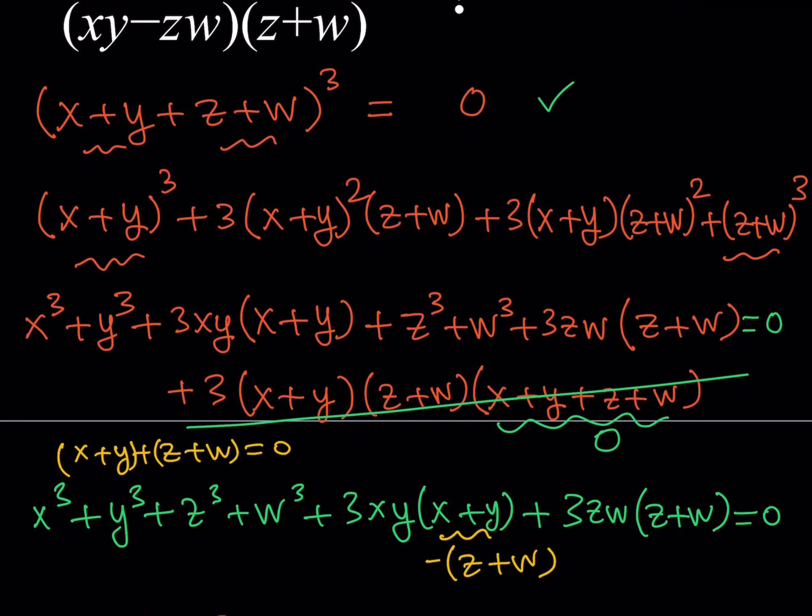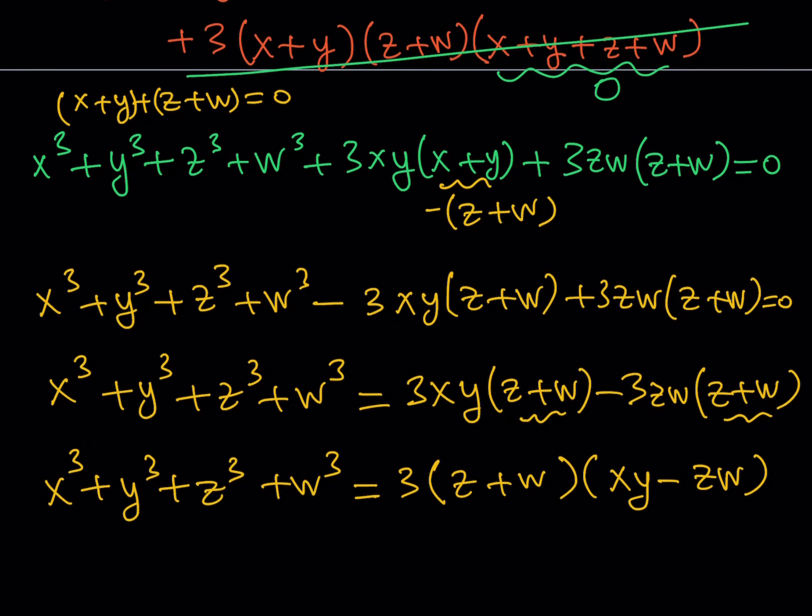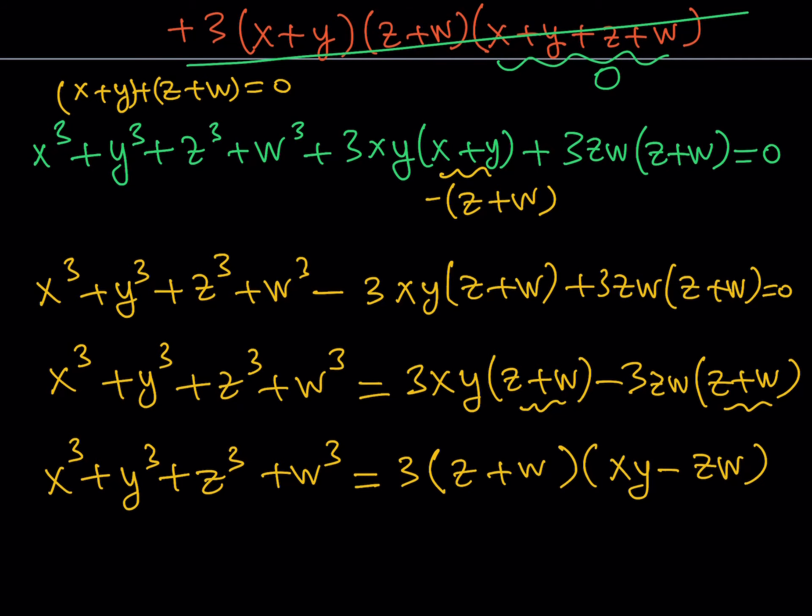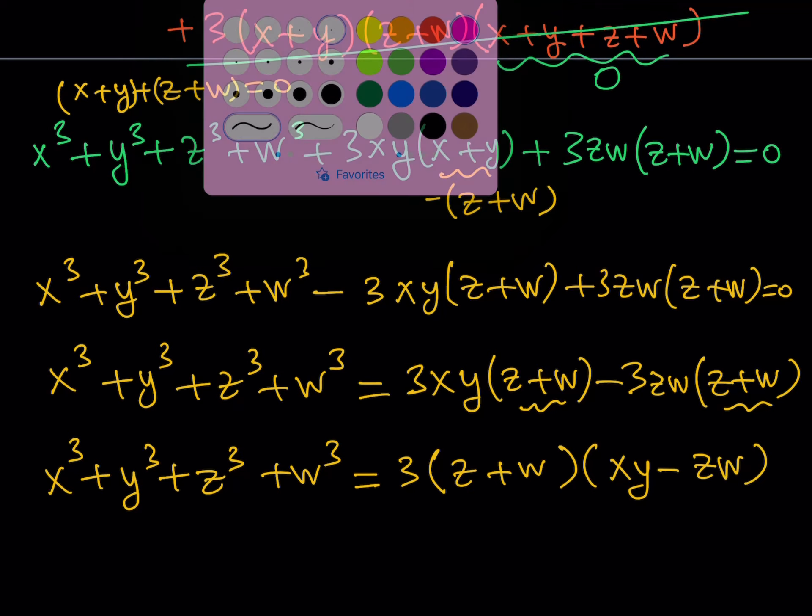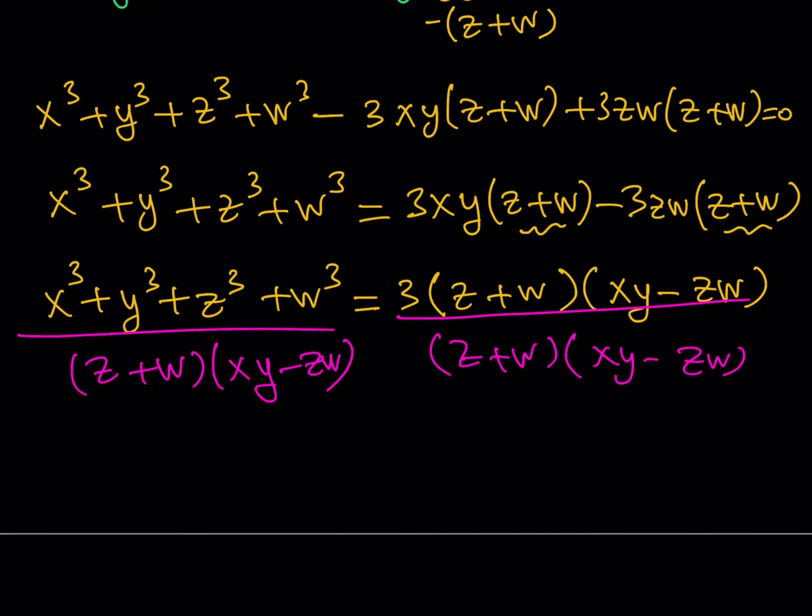We're almost there because our expression has that part in the denominator and the other part in the numerator. In order to get our expression from here, I can divide both sides by z plus w times xy minus zw. This is what we're looking for, and this is going to be one. So the answer is going to be three.